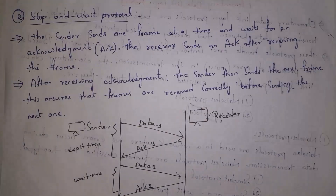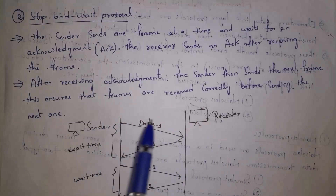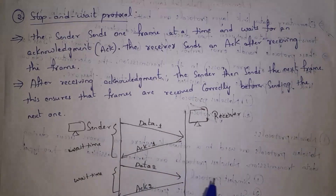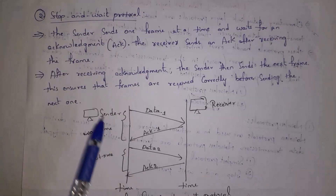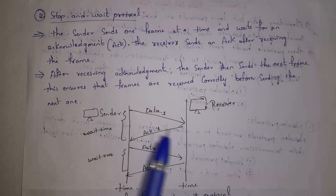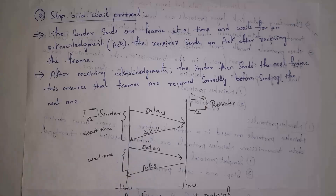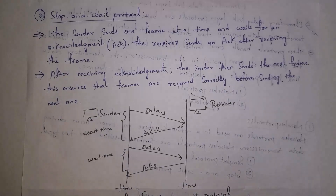The second noiseless protocol is stop and wait protocol. Whenever sender sends each frame, receiver will give acknowledgement. Acknowledgement is a reply message — receiver will send a message like 'data is reached successfully'. Whenever sender sends one frame, receiver will give a reply, and only after receiving that reply will sender send the next frame. This process will continue. Simplest protocol and stop and wait protocol are noise-less protocols — there will not be any errors and data will reach the receiver successfully.